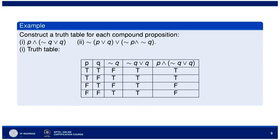Let us construct truth tables for two compound propositions: first, P and (not Q or Q); second, not (P or Q) or (not P and not Q). For the first, the truth values of P and Q are TT, TF, FT, FF. The negation of Q gives F, T, F, T respectively. Then not Q or Q always gives T in all four cases. And P and T gives T, T, F, F. So the truth values for P and (not Q or Q) are T, T, F, F.